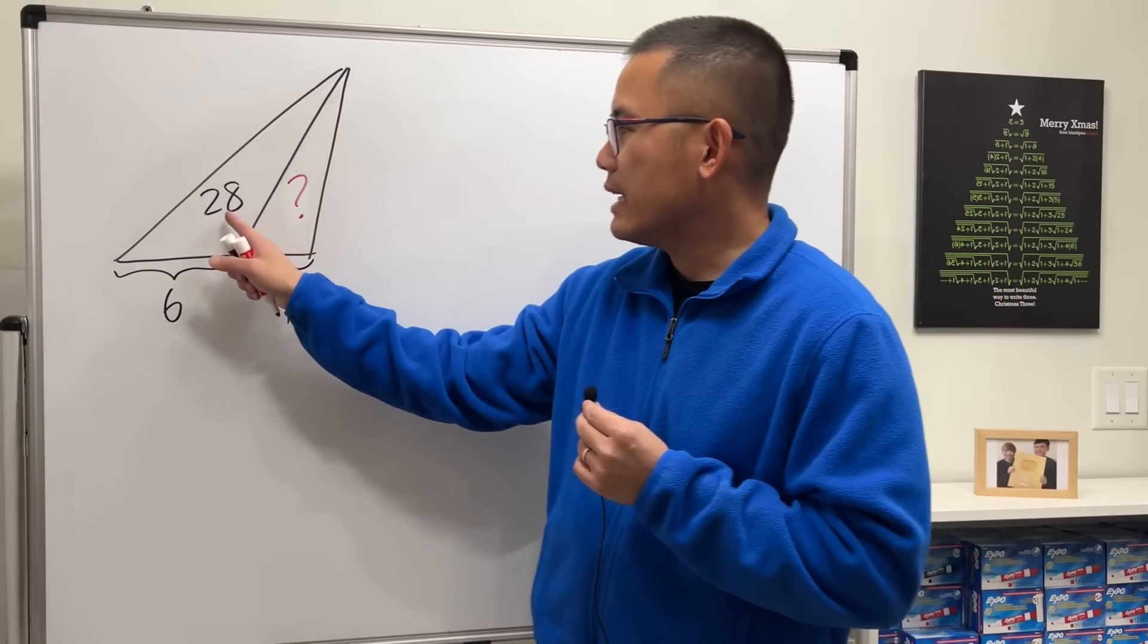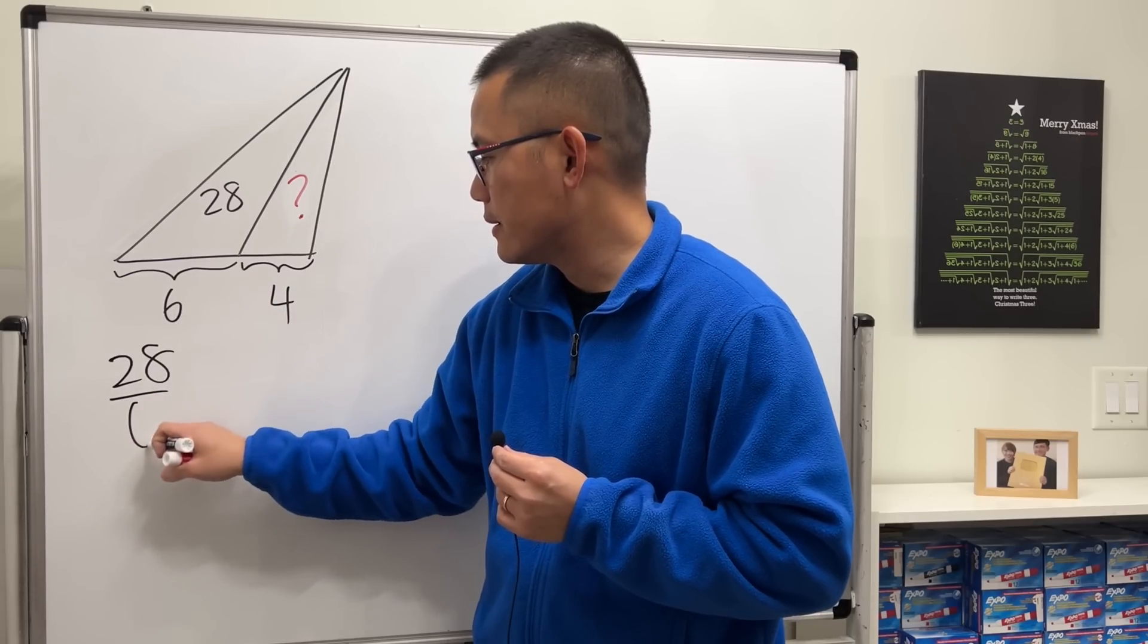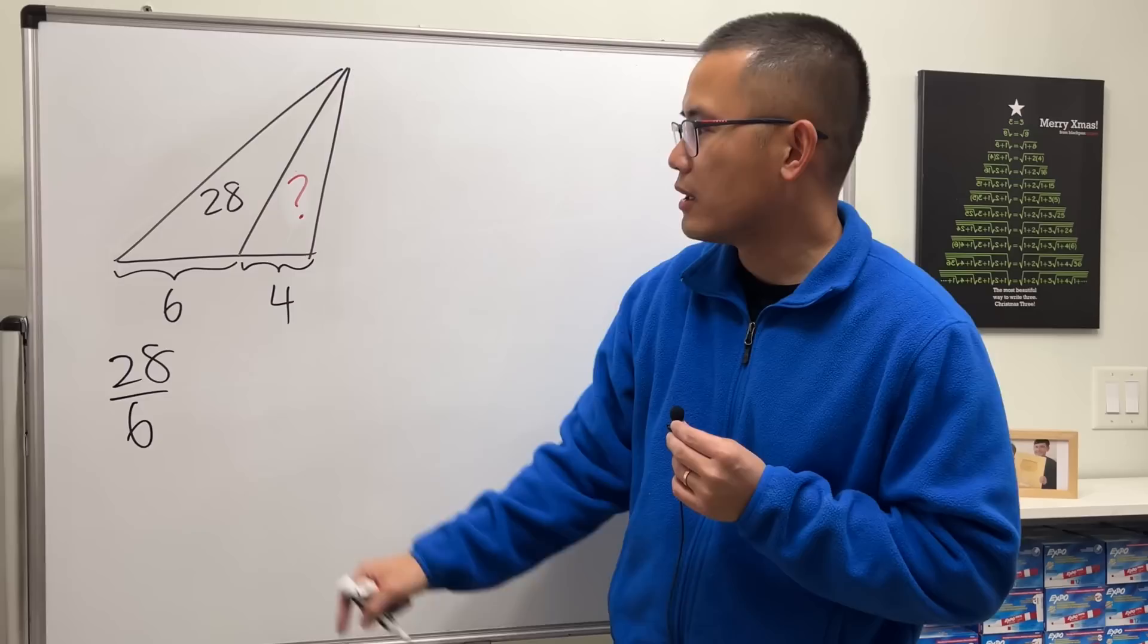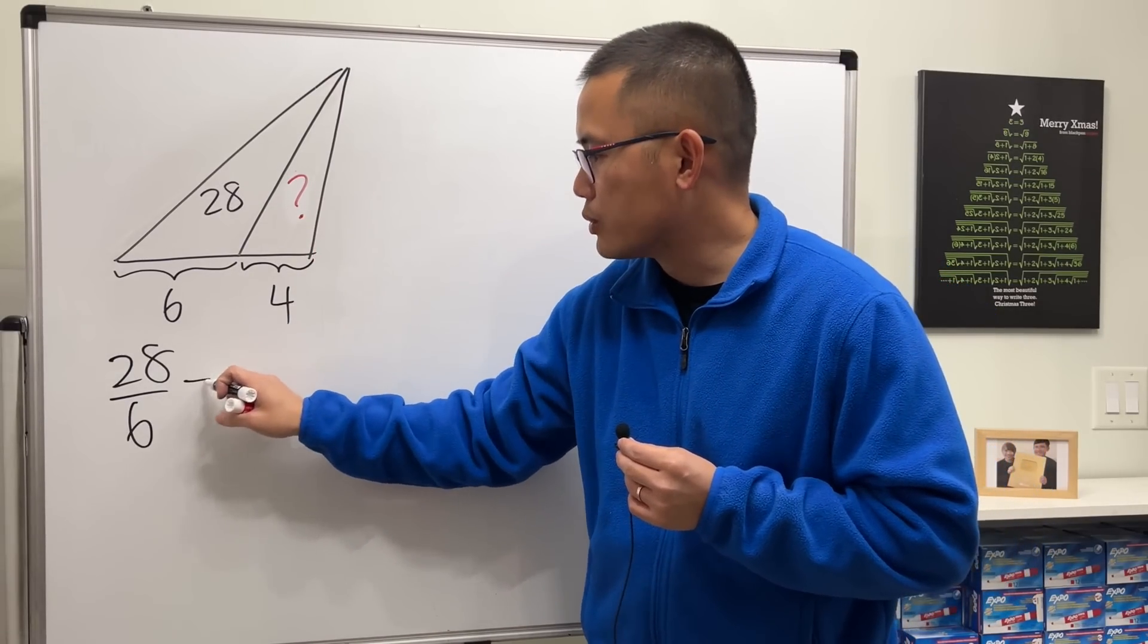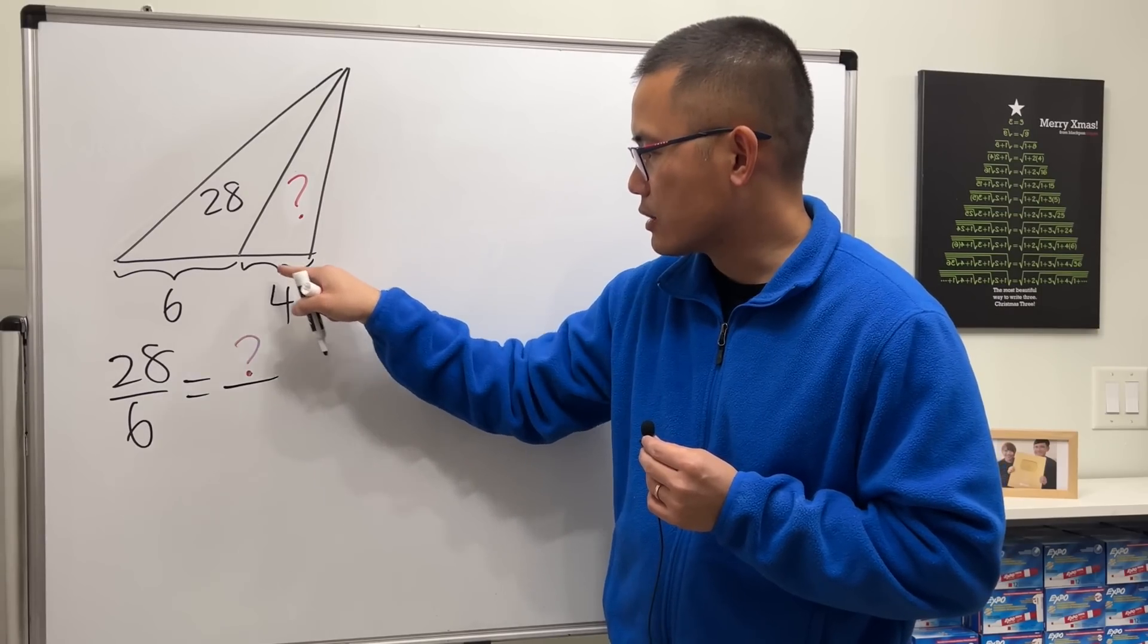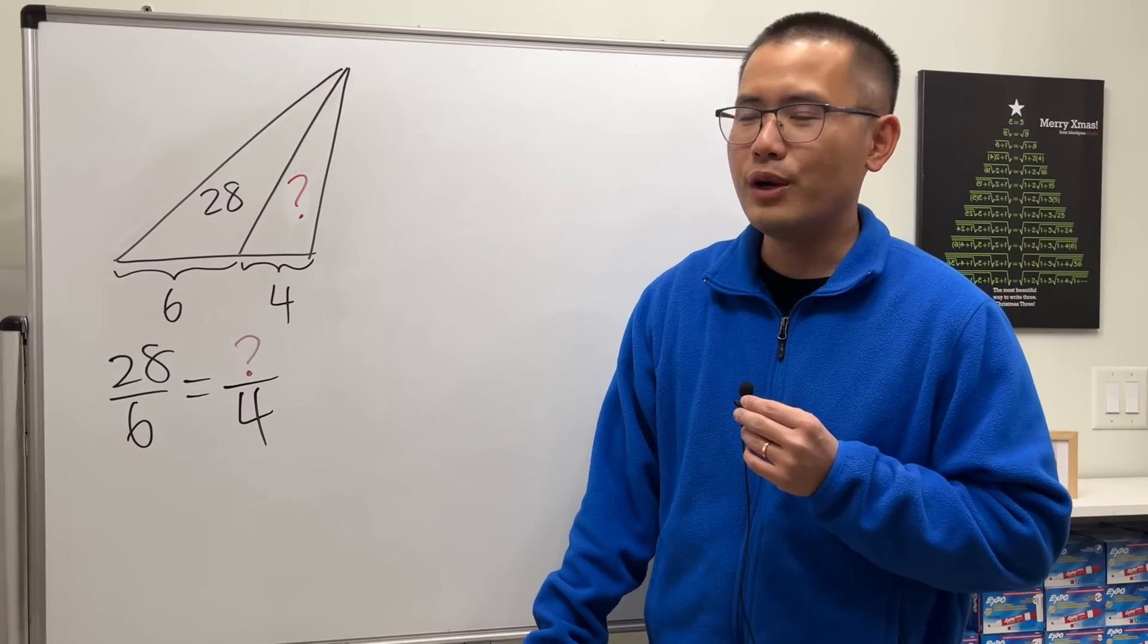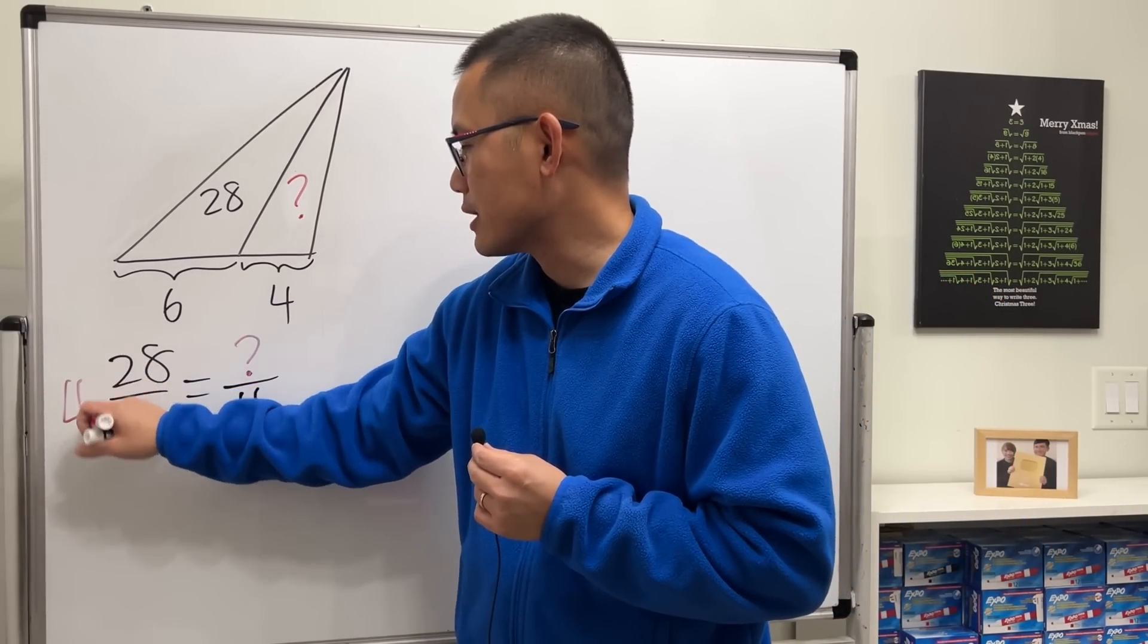This is all you have to do: I can put 28 over 6, area divided by its corresponding side here, and then make that equal to the question mark divided by its corresponding side which is 4. Now we can just solve for this equation - multiply both sides by 4.